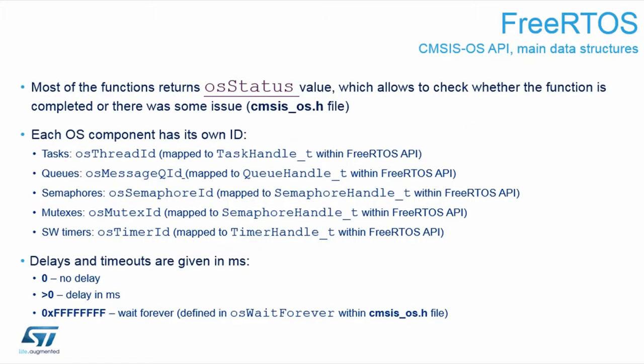The CMSIS RTOS always begins with OS and then the description of the function, which is very nicely readable. The CMSIS RTOS still uses underneath the original operating system — so it's a wrapper layer. When you call the OS function, it will take all the parameters, make some security checks, and then call the original function. So yes, a couple of clock cycles on top.